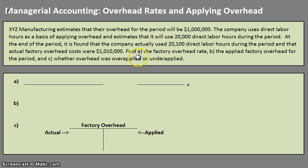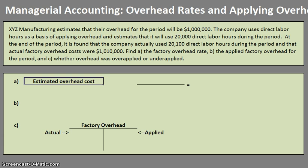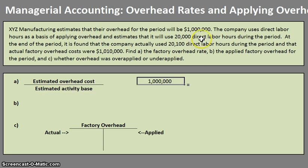The first thing we need to find is A, the factory overhead rate, which uses a formula. One thing you should really remember when looking at this formula is it's estimates divided by estimates — essentially the estimated cost divided by the estimated activity base. When looking at the estimated cost, we focus on the overhead cost, which in our case was $1,000,000. Keep in mind we're using estimates, not the actual. Our estimated activity base, which our problem identifies as direct labor hours, was 20,000.